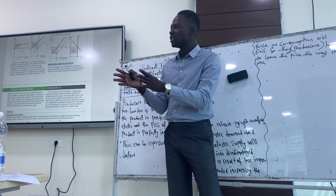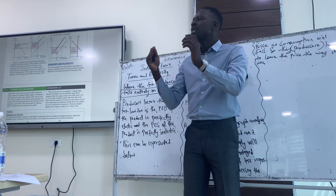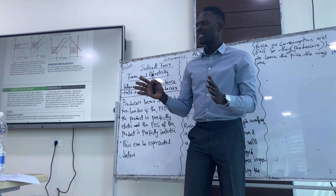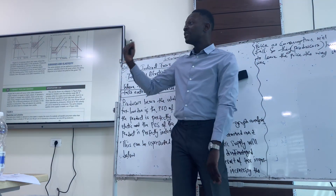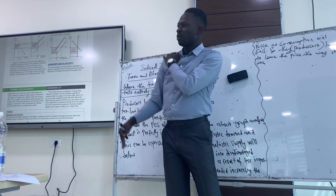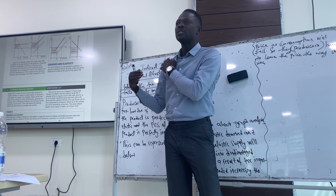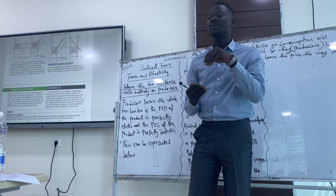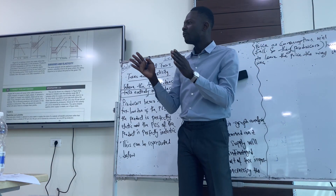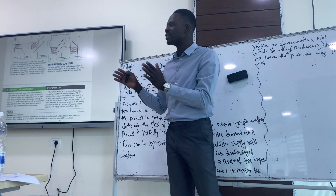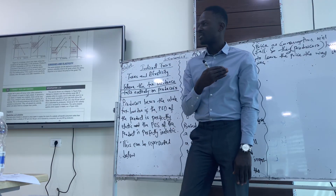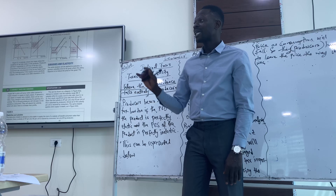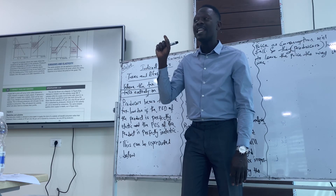If it is inelastic, it means I am unable to switch from product A to B because we only have product A available. So if it is perfectly inelastic, the incidence goes to consumers. For perfectly elastic demand, the tax incidence goes on producers, because at that point in time, they cannot increase the price. That is perfectly elastic demand.